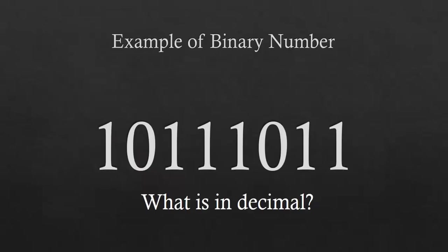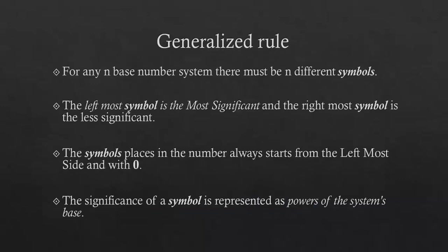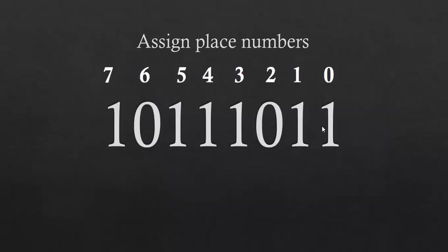Here's an example of a binary number: 10111101. What is the equivalent decimal number? To calculate this, we assign place numbers from the right side starting from 0, 1, 2, 3, up to the 7th place.